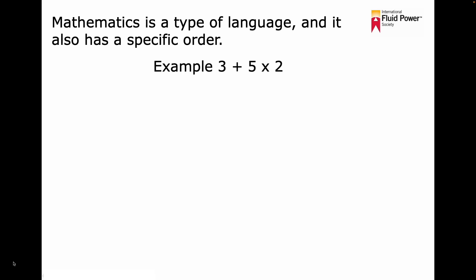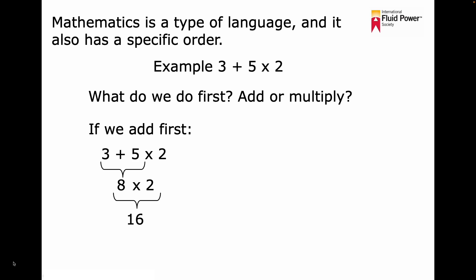For example, three plus five times two. What do we do first? Add or multiply? If we add first, three plus five times two, that gives us eight times two, or 16. If we multiply first, three plus five times two gives us three plus ten, which is 13.